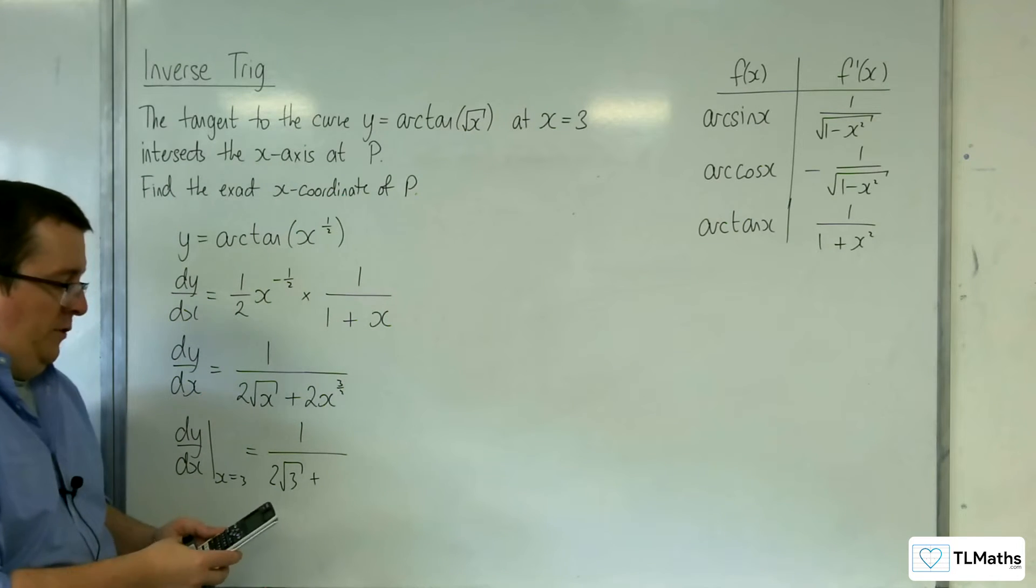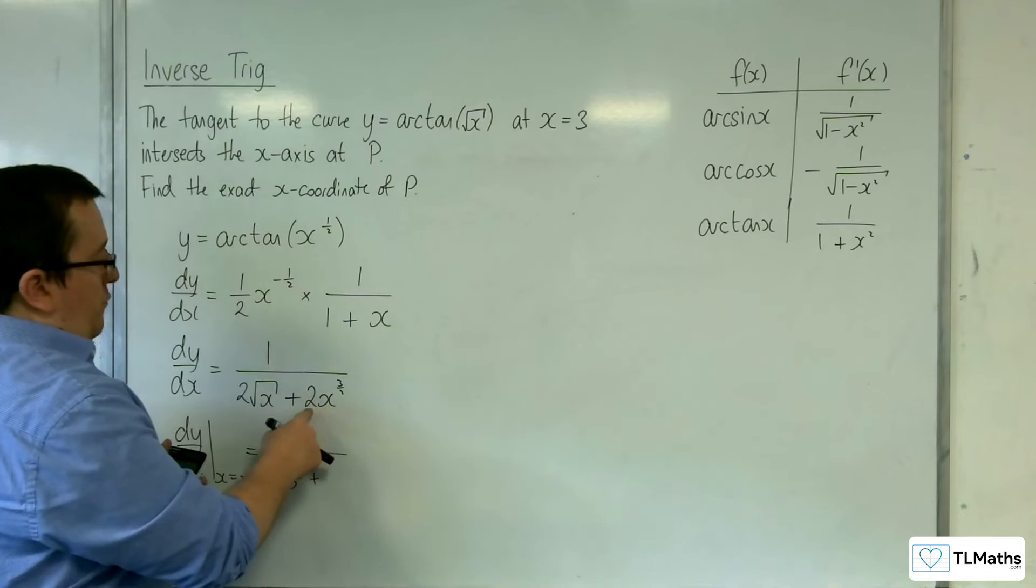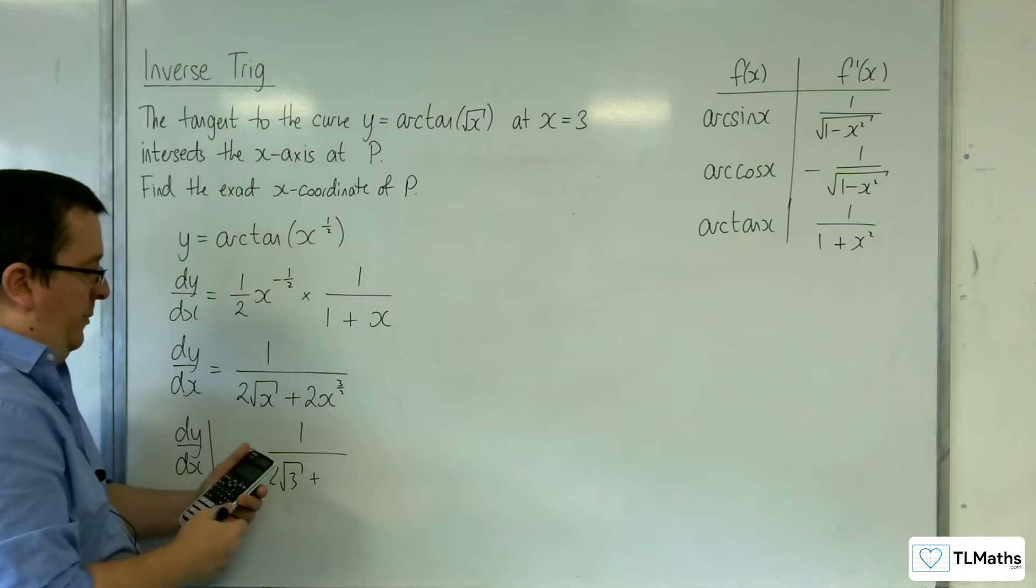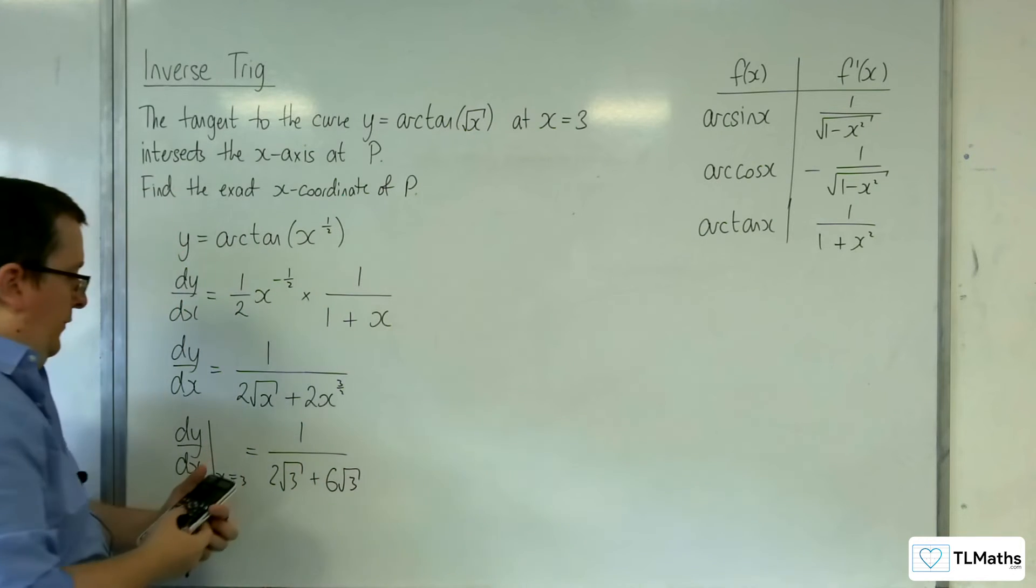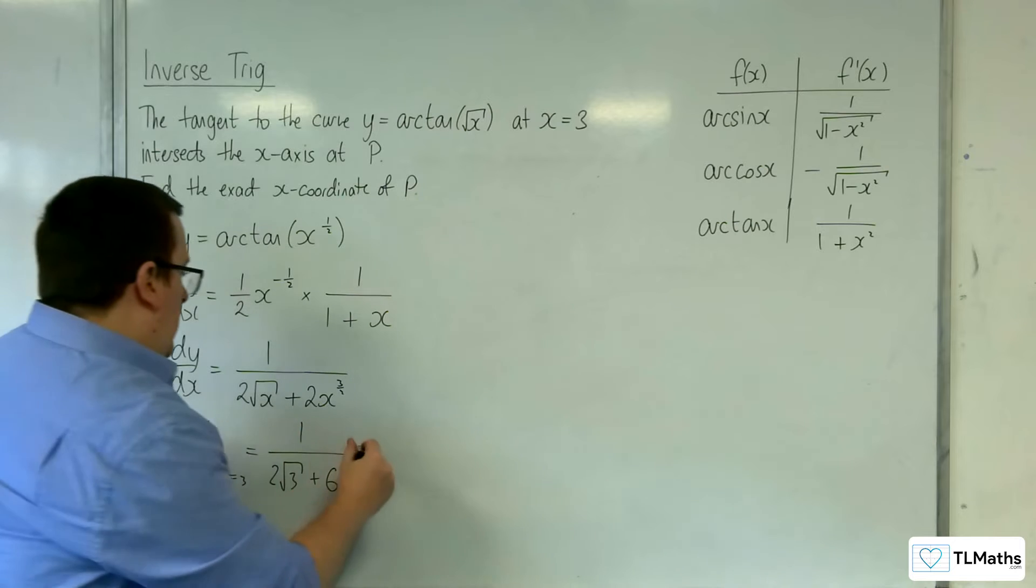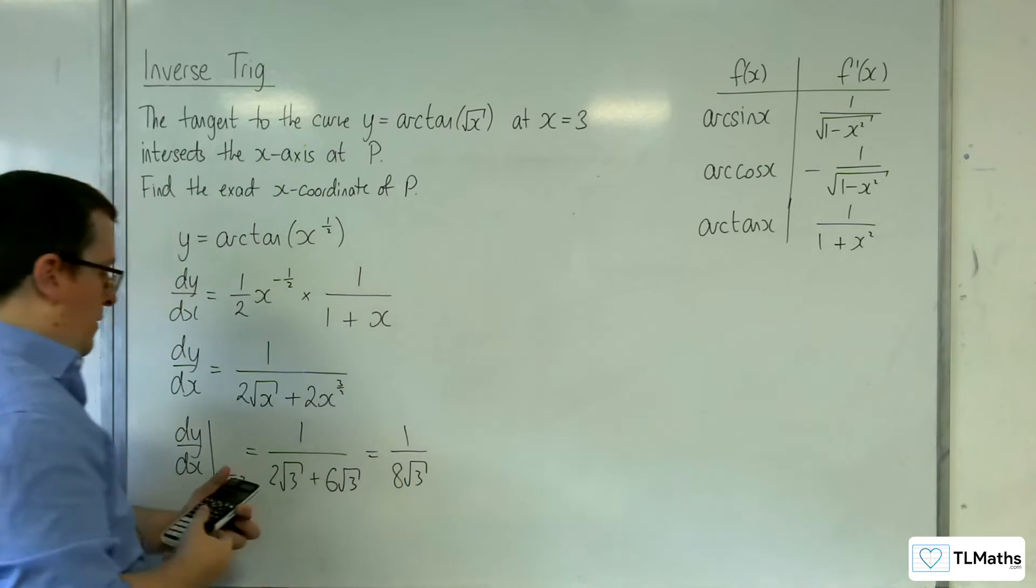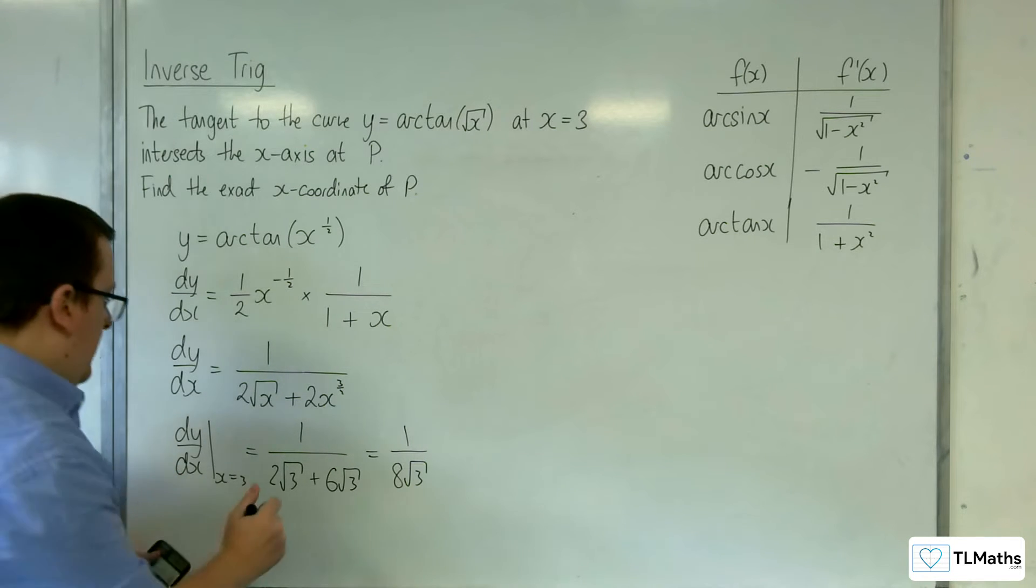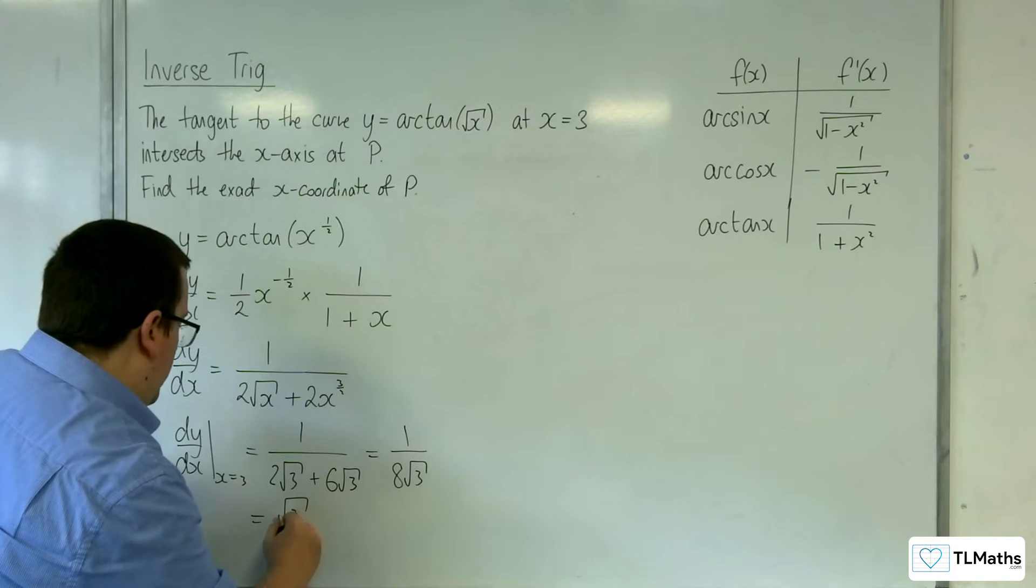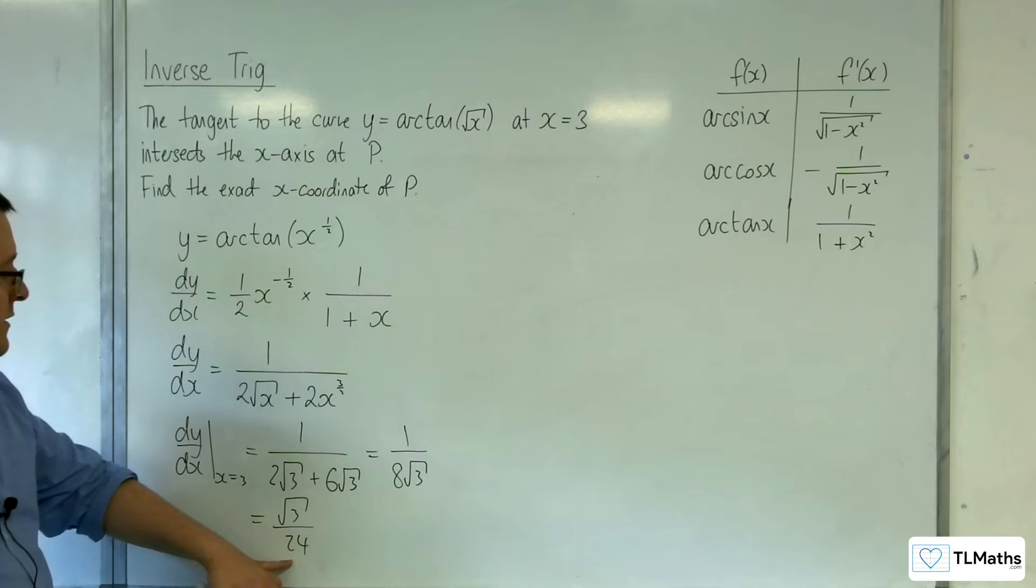So if I do the 3 cubed first and then square root that, we get 3 root 3, and that's being multiplied by 2, so we've got 6 root 3. So we've got 1 over 8 root 3, and that simplifies to root 3 over 24, so that's the gradient of the tangent.